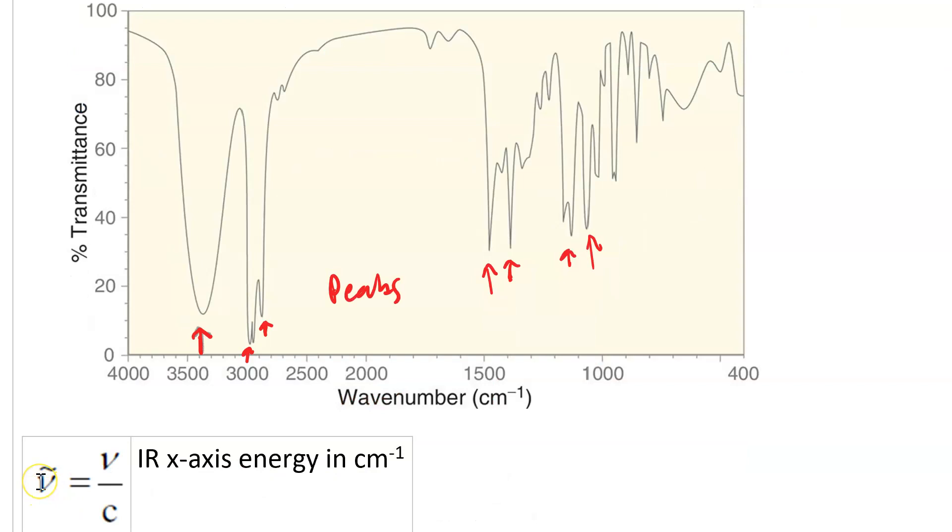Nu tilde signifies wavenumber, which is inverse centimeters. You get it by taking the frequency and dividing it by the speed of light in centimeters per second.